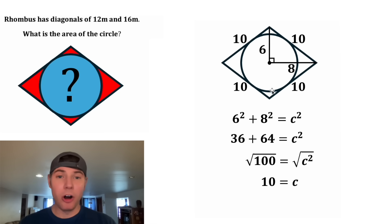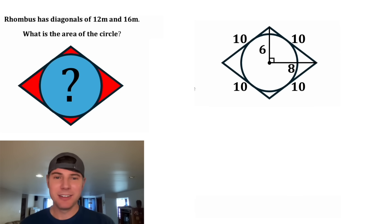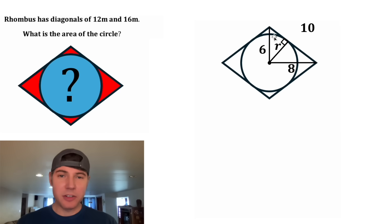So we now know this hypotenuse is equal to 10. And since it's a rhombus, we know all these sides are equal to 10. Next, let's connect this radius to here, and we know this will also be at right angles. The radius going to the tangent point will always be at right angles to that tangent line. Let's break this into two parts. Let's call this piece A, and that means this other piece would be 10 minus A.